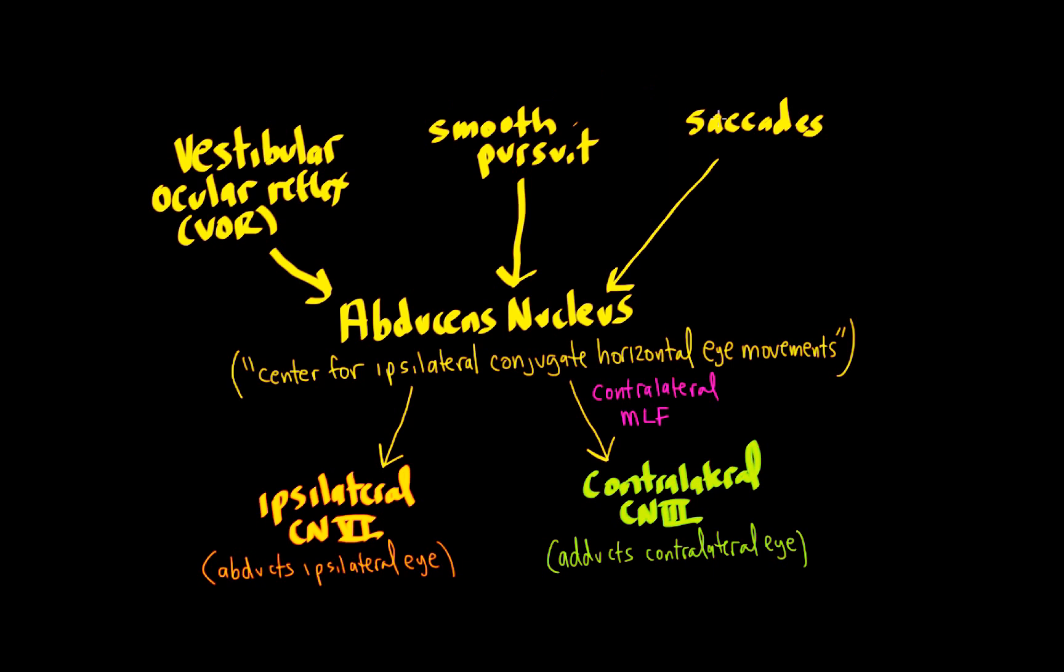Now how they're going to talk to the abducens nucleus is going to be different. There's going to be some different parts of the pathway, but the common pathway for all of these movements is always the abducens nucleus. And that's because it gives rise to these cranial nerves that control the abduction and adduction of the eyes so they move together.